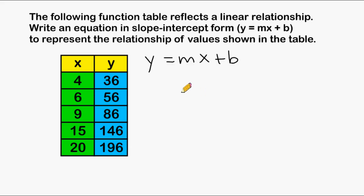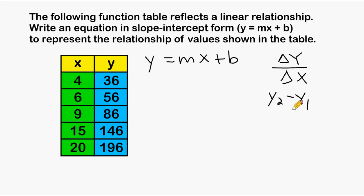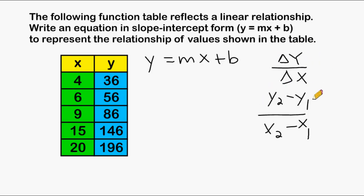The first thing we are going to do is determine what our slope, or the m value, is. Slope is defined by the change in y values as compared to the change in corresponding x values. The equation you see a lot is y2 minus y1 over x2 minus x1 — this is the slope formula. This little triangle, called delta in math, represents change. So we can say the change in y over the change in x.